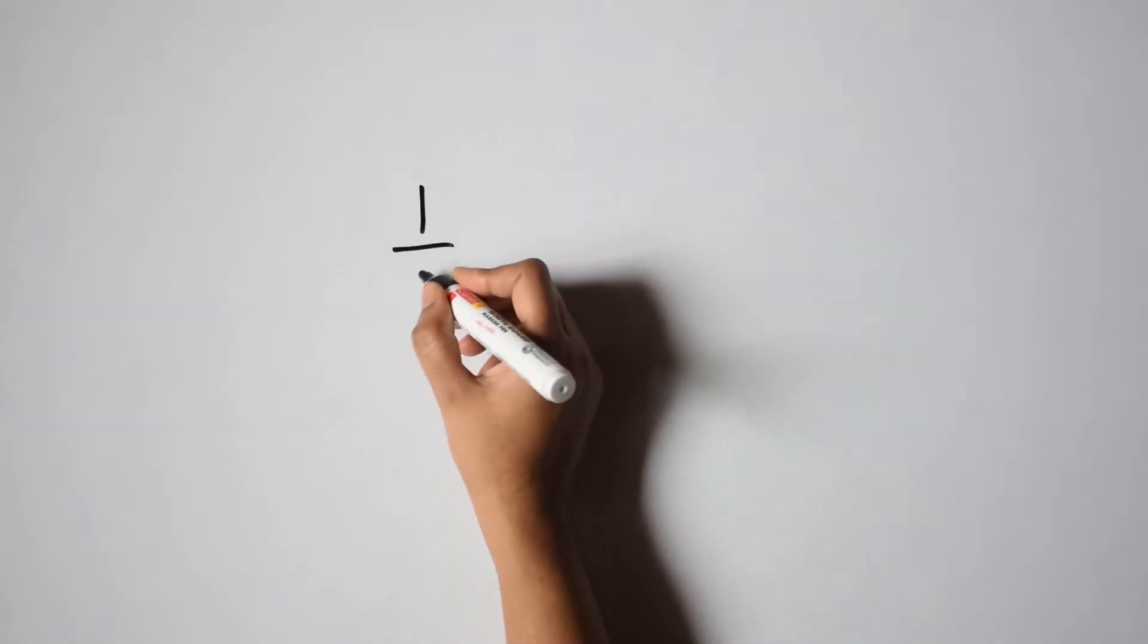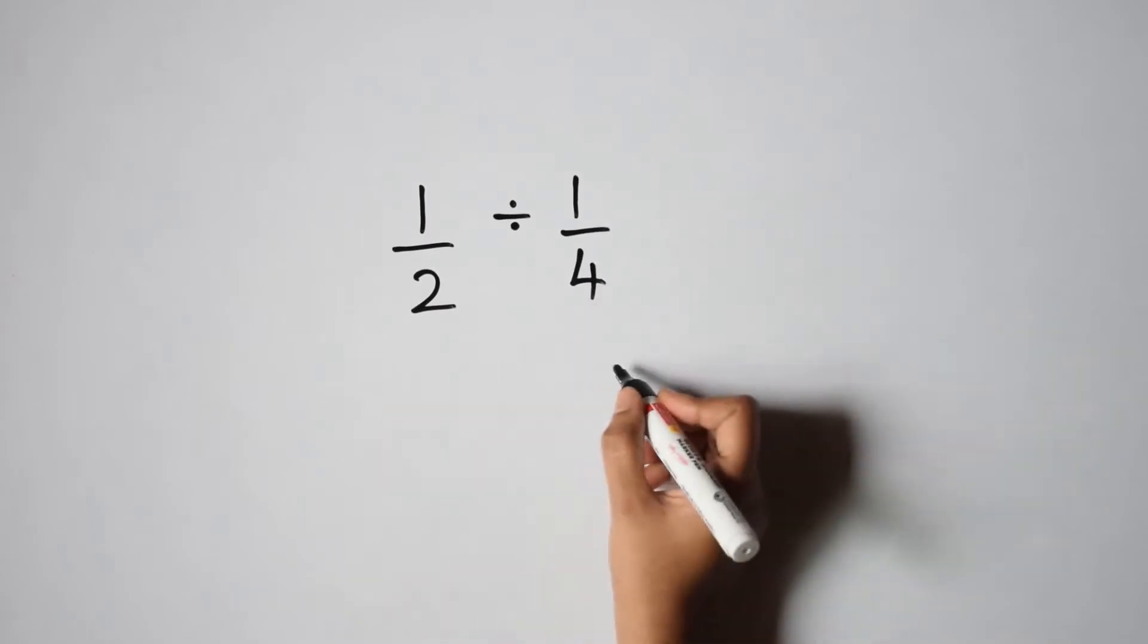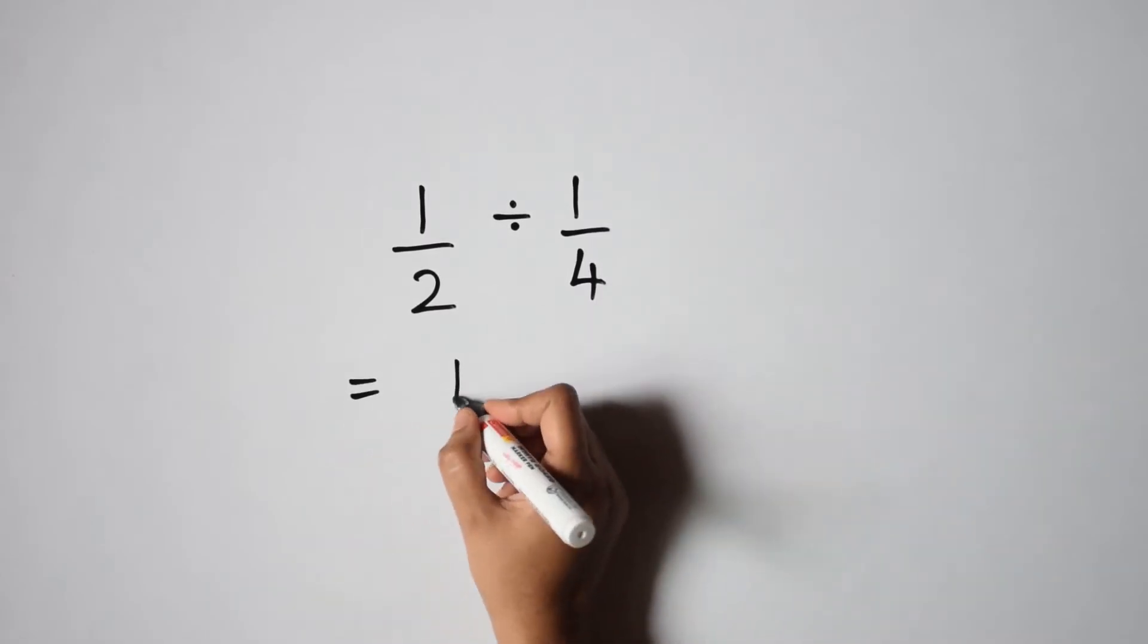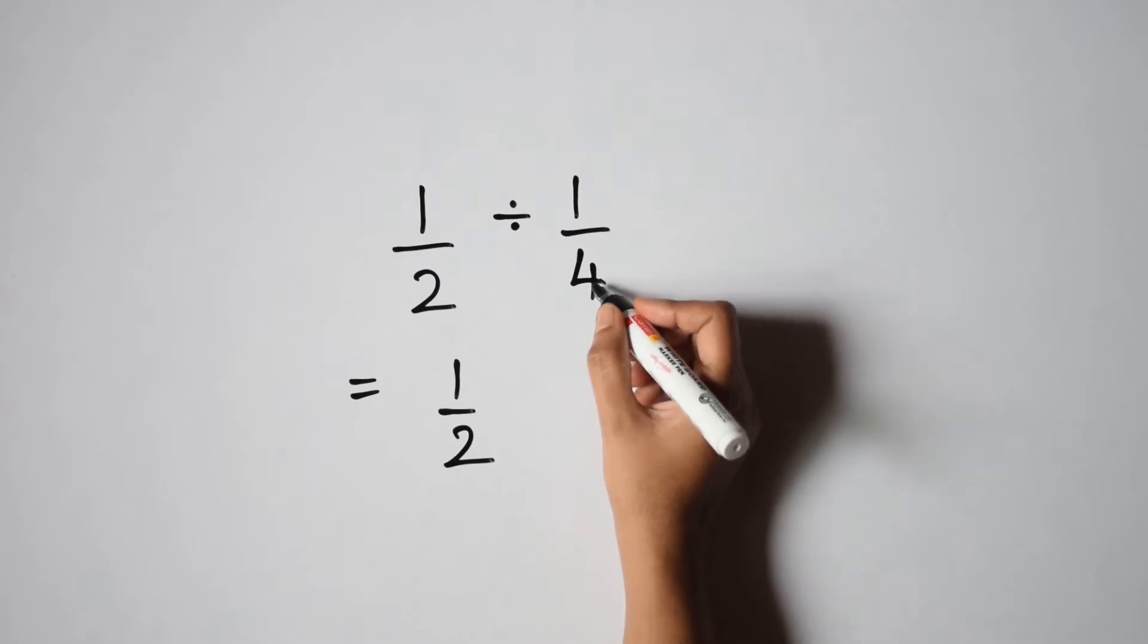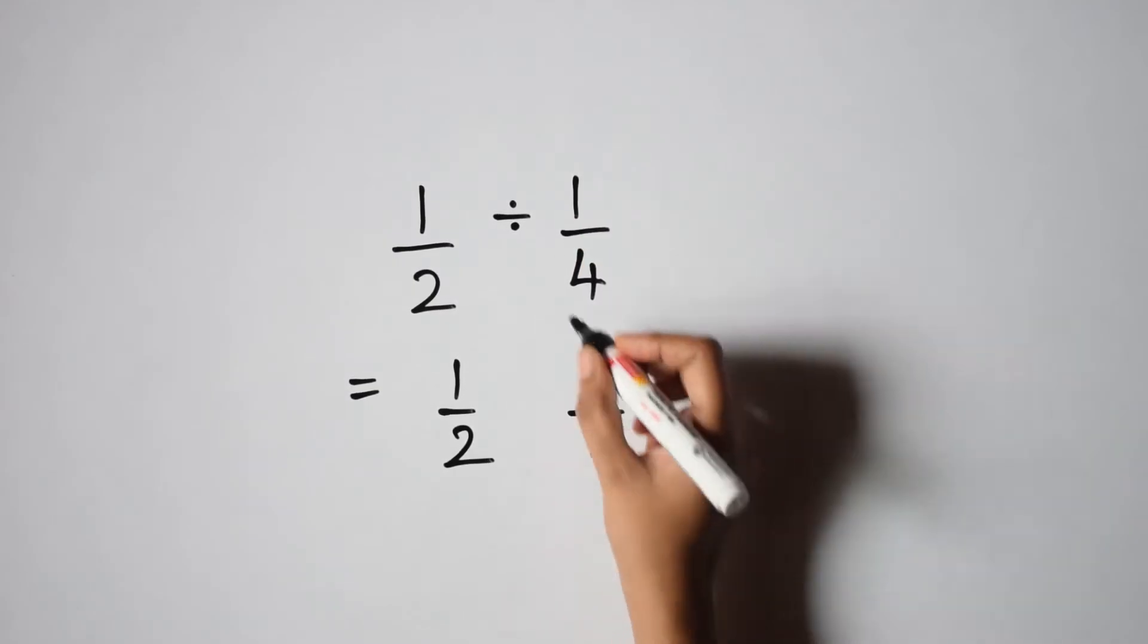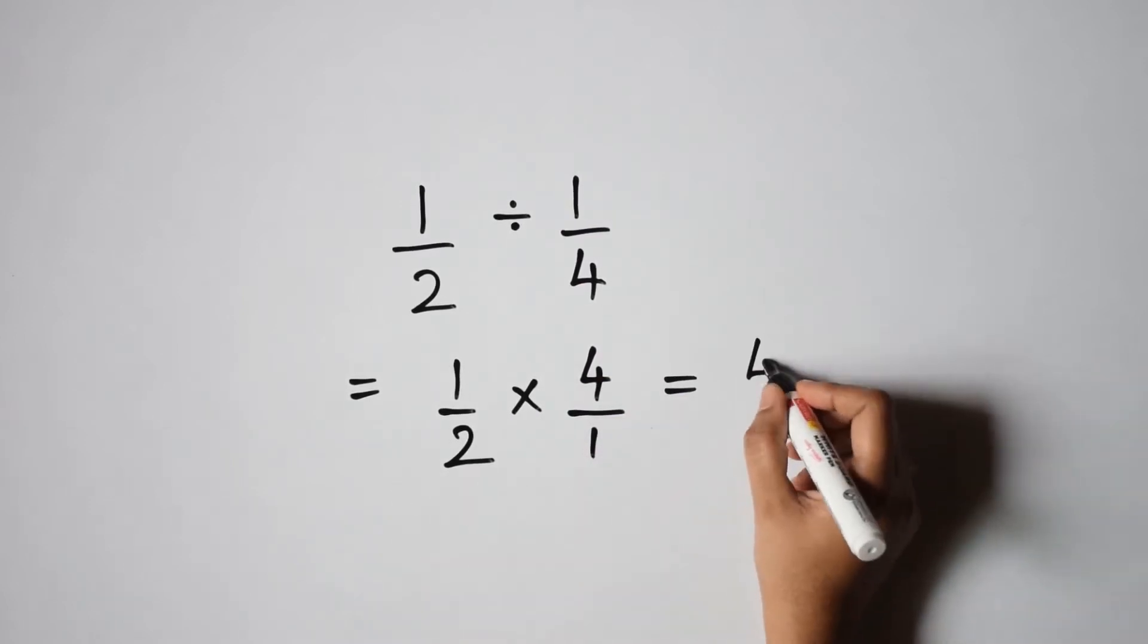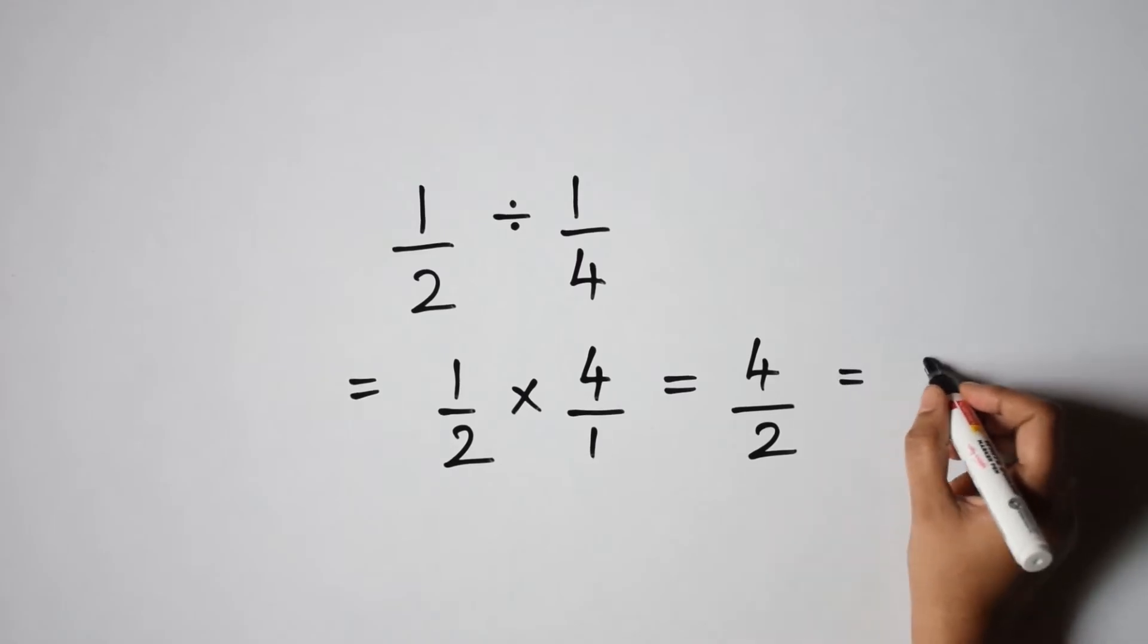Let us try 1 by 2 divided by 1 by 4. How do we do this? We write the first fraction as it is and we write the reciprocal of the second fraction and we change this division problem into a multiplication problem. So we get 4 by 2 which is nothing but 2.